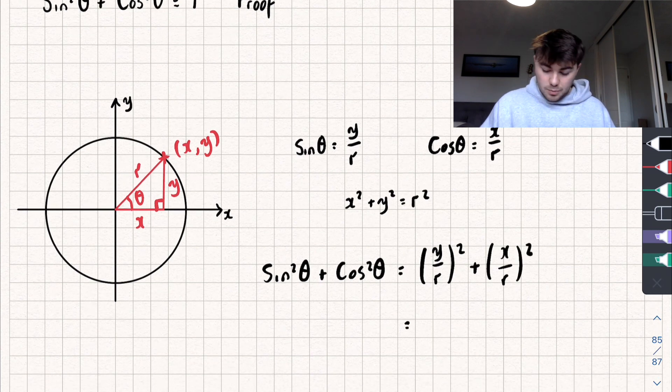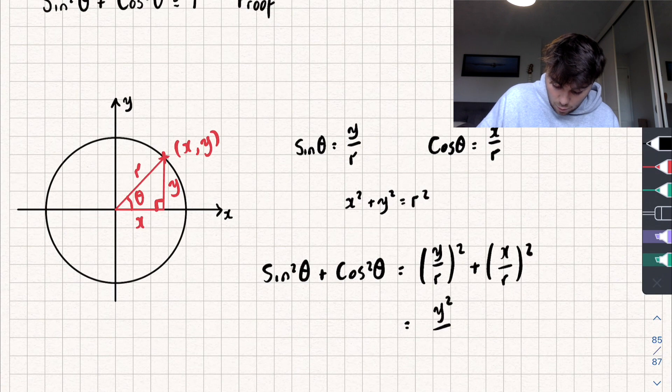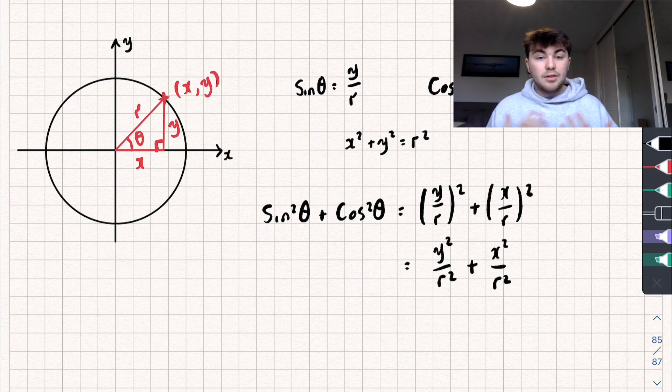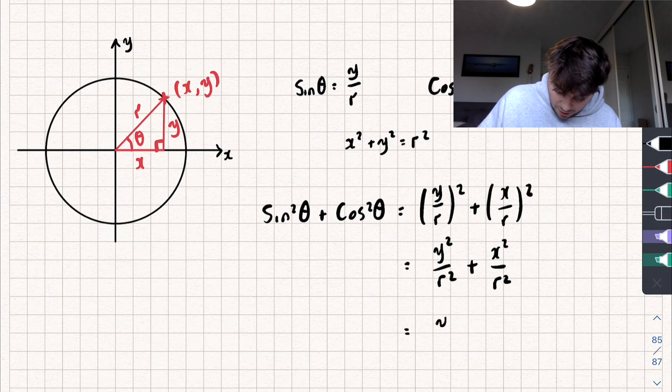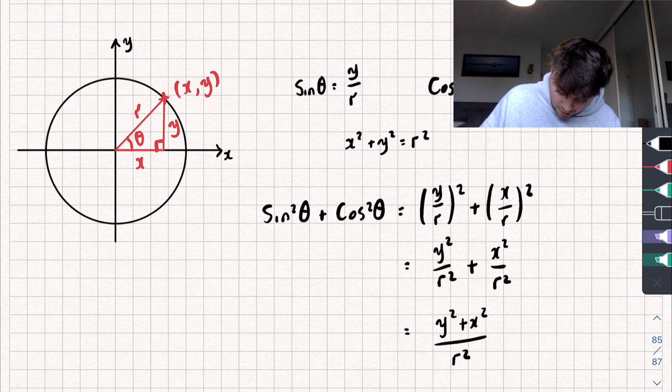We could now expand those brackets and we could say that that's equal to y squared over r squared plus x squared over r squared. Now I could just add those fractions together and we get that y squared plus x squared divided by r squared is equal to sine squared theta plus cos squared theta.